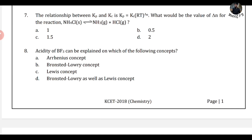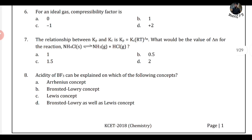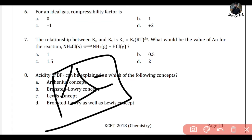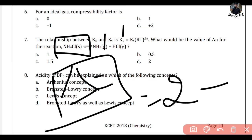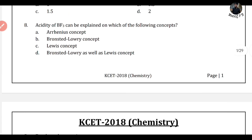The relationship between Kp and Kc is: Kp = Kc(RT)^ΔN. For the reaction NH4Cl(s) → NH3(g) + HCl(g), what is the value of ΔN? Products have 1 + 1 = 2 moles of gas. Reactants have 0 moles of gas. So ΔN = 2 − 0 = 2. Easy question.